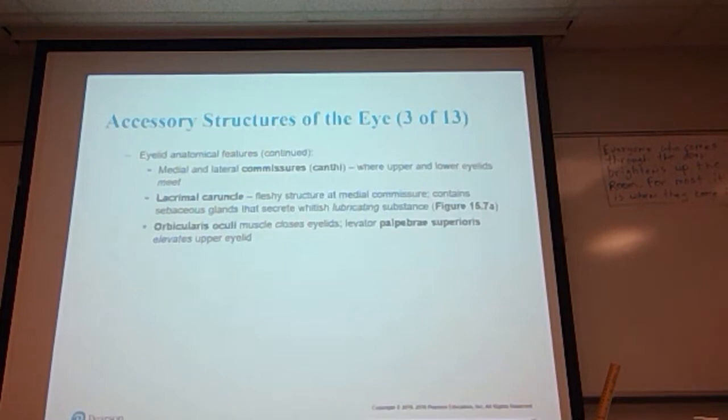The eyelid medial and lateral commissures or canthi are where the upper and lower eyelids meet. The lacrimal caruncle is a fleshy structure at the medial commissure containing sebaceous glands that secrete a whitish lubricating substance. If you look in the corner of your eye next to your nose, you'll see a little knot of tissue—that is the lacrimal caruncle. The orbicularis oculi is the muscle responsible for closing the eyelid. The levator palpebrae superioris is the muscle that elevates the upper eyelid.